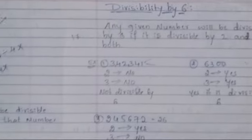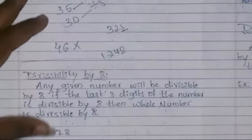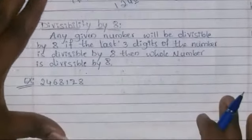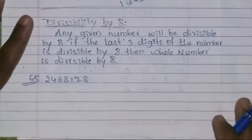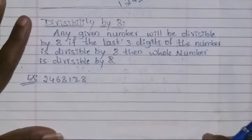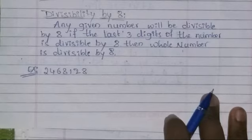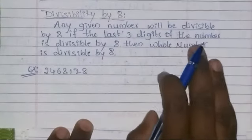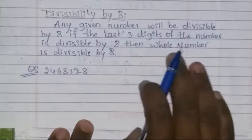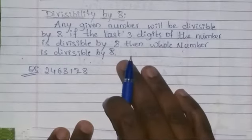We will now check the divisibility of eight. Divisibility of seven is a little bit difficult — if you know the table of seven it is easy to check, but we'll skip that. For divisibility of eight: any given number will be divisible by eight if the last three digits of the number are divisible by eight. Then the whole number is divisible by eight.